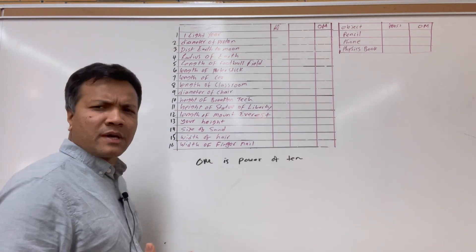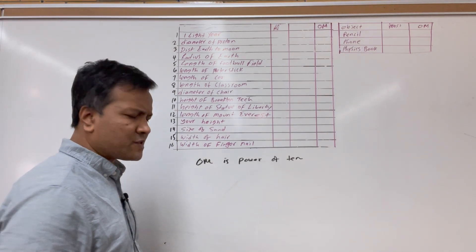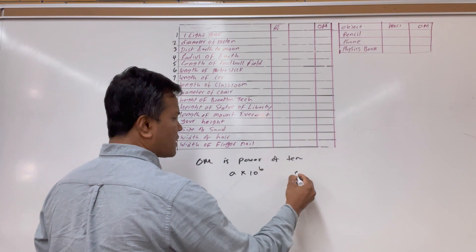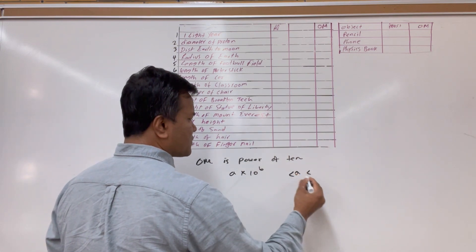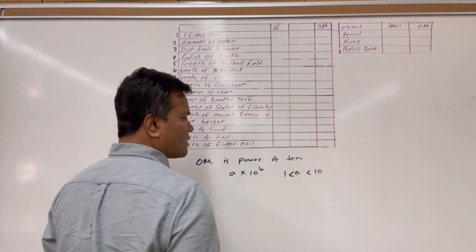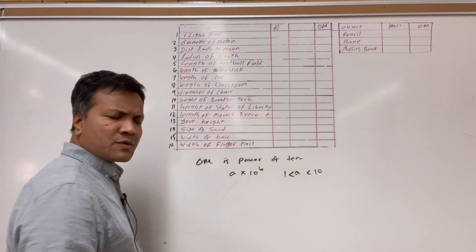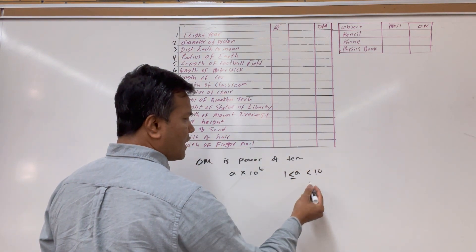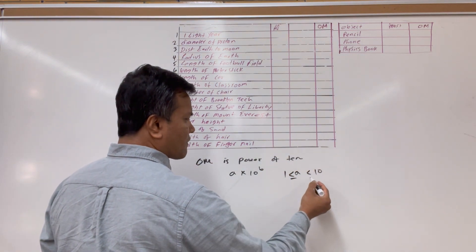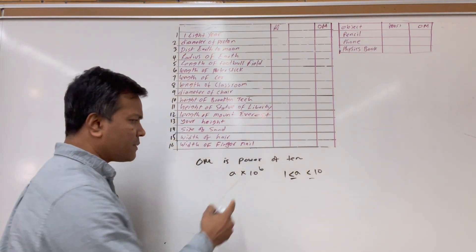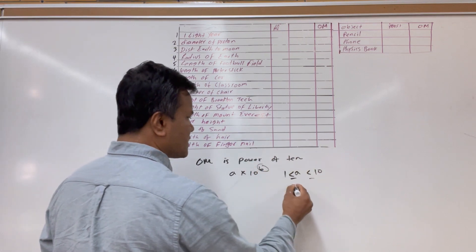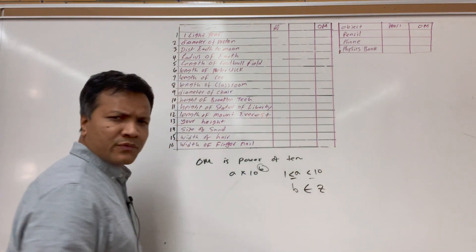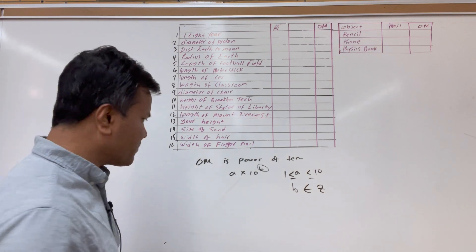The order of magnitude is the power of 10. We have to use scientific notation: A times 10 raised to B. A has to be between 1 and 10 — greater than or equal to 1 and less than or equal to 10. And B has to be a whole number, be it positive or negative.